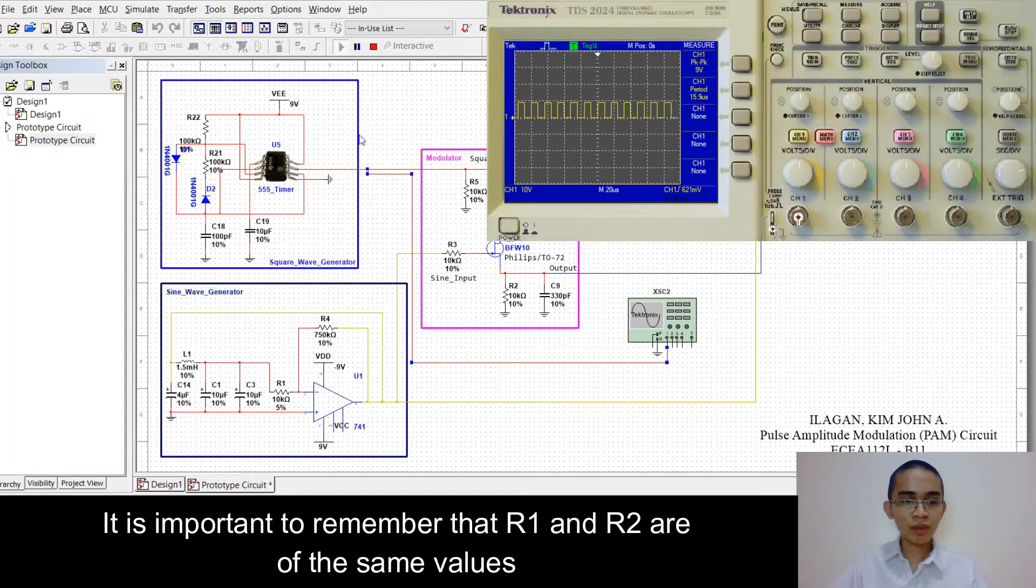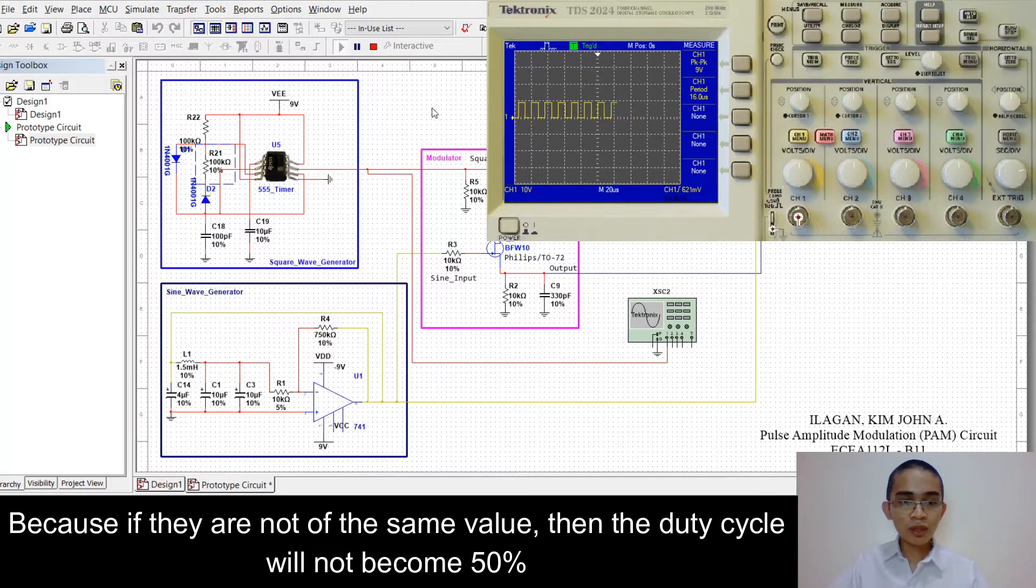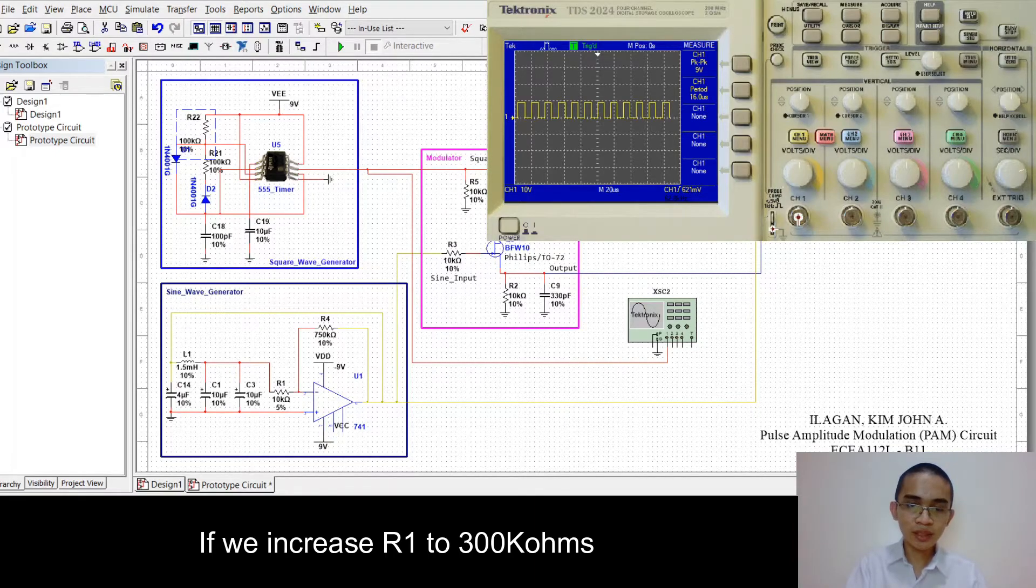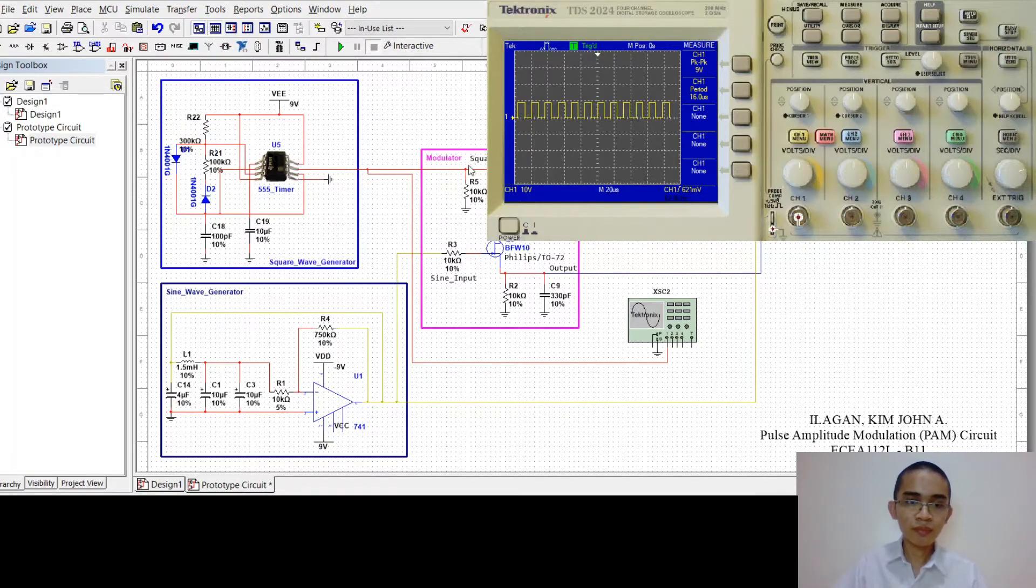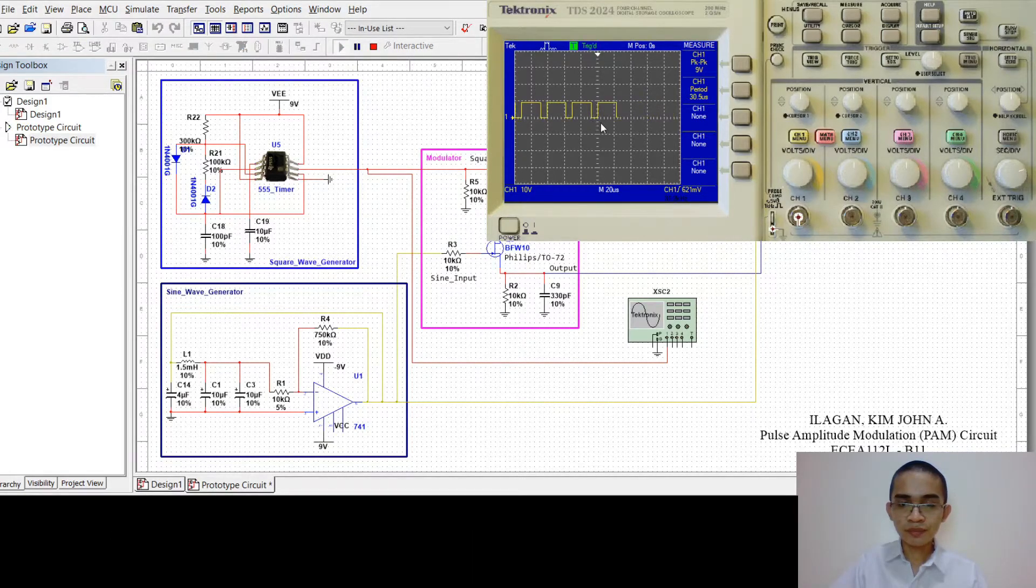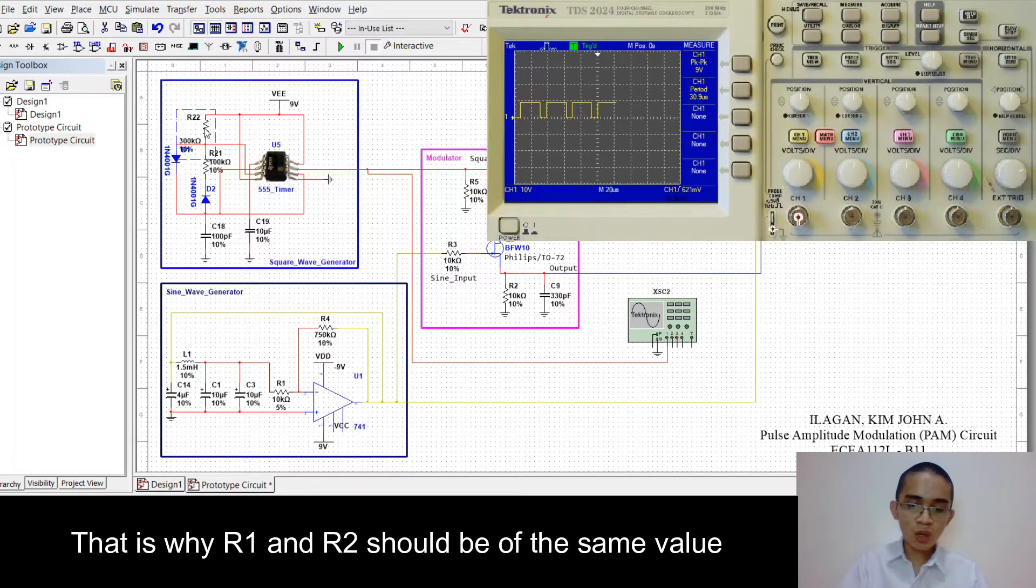It is important to remember that R1 and R2 are of the same value. Because if they are not of the same value, then the duty cycle will not become 50%. If we change R1, if we increase R1 to 300 kilo ohms, then our comparator limit will increase. That is why R1 and R2 should be of the same value.